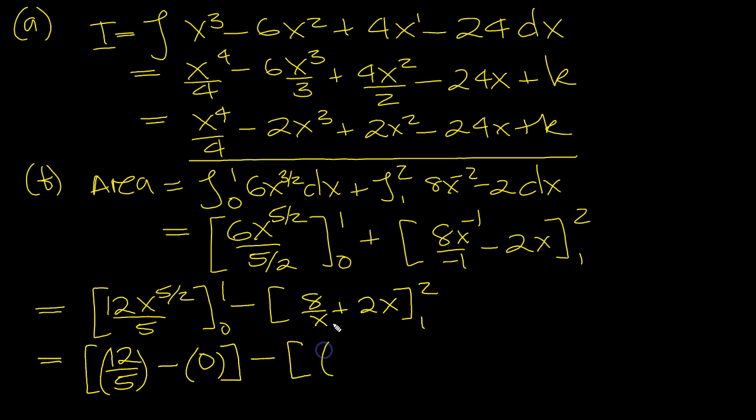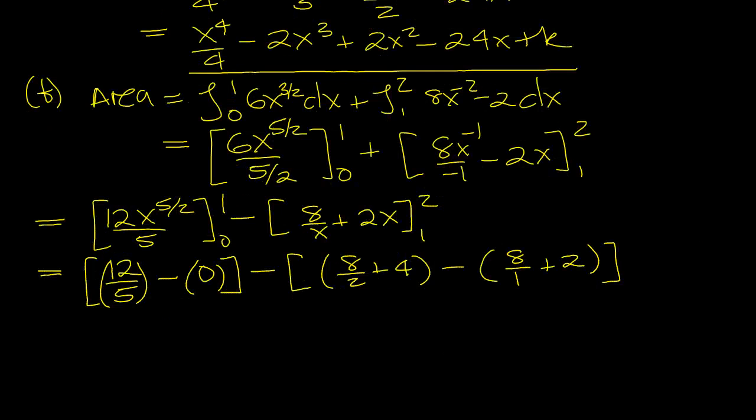Minus top value, 8 over 2 plus 2 times 2, which is 4. Take away bottom value, 8 over 1 now, plus 2 times 1, which is 2. That's the bottom value, close bracket. Let's see what we've got there.